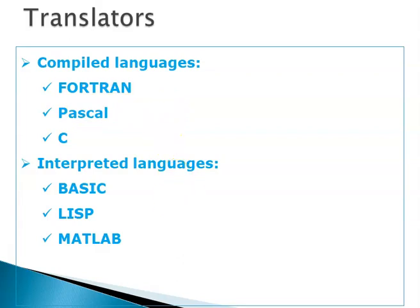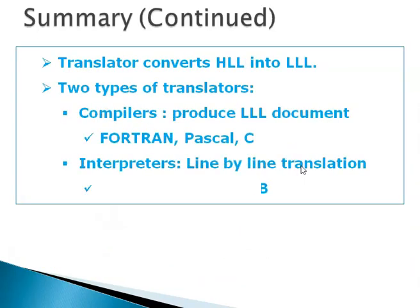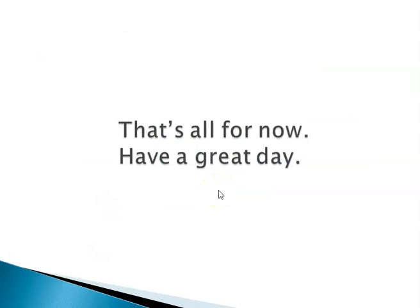So in summary we see that executable language, machine language, or low-level language is a language of zeros and bits. The language in which humans talk is high-level language, or we call it source code. Translators convert HLL into LLL. Compiled languages are Fortran, Pascal, and C. Interpreted languages are BASIC, LISP, and MATLAB.